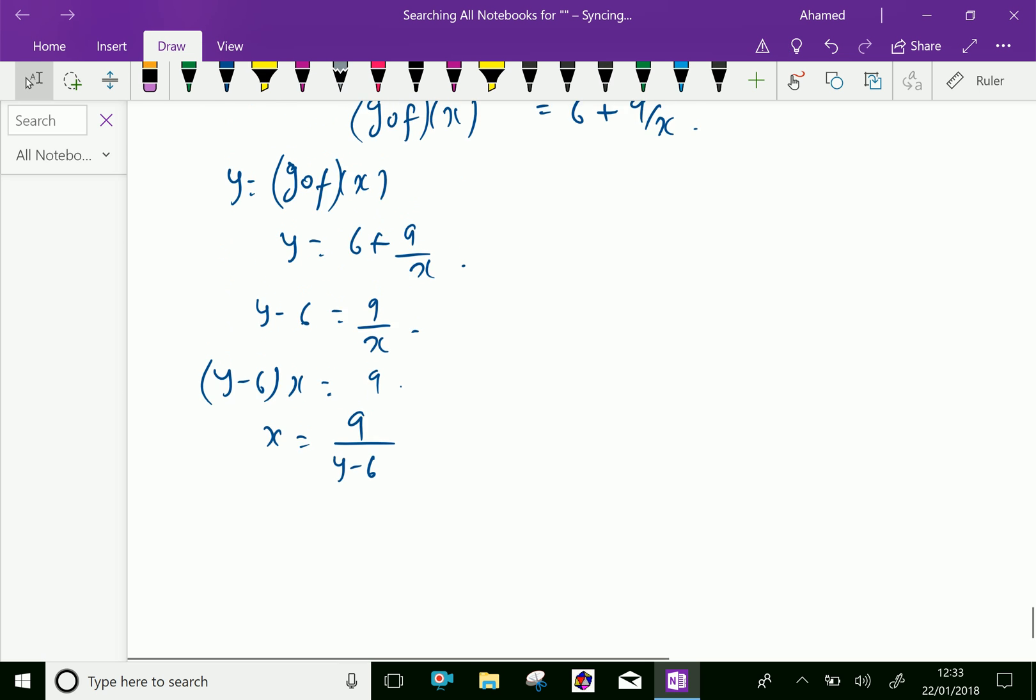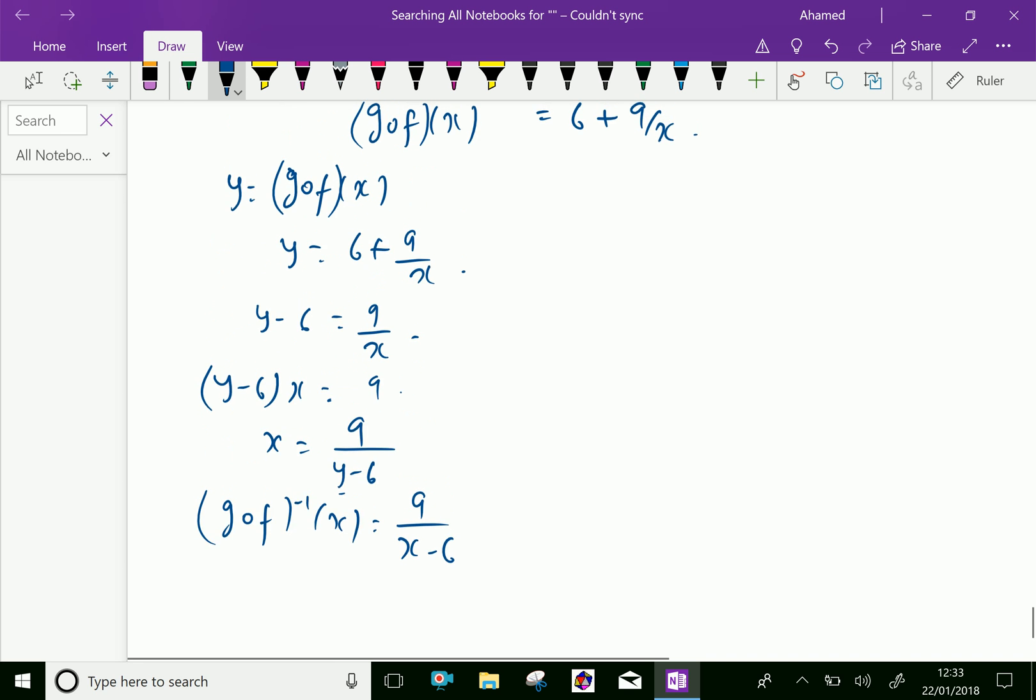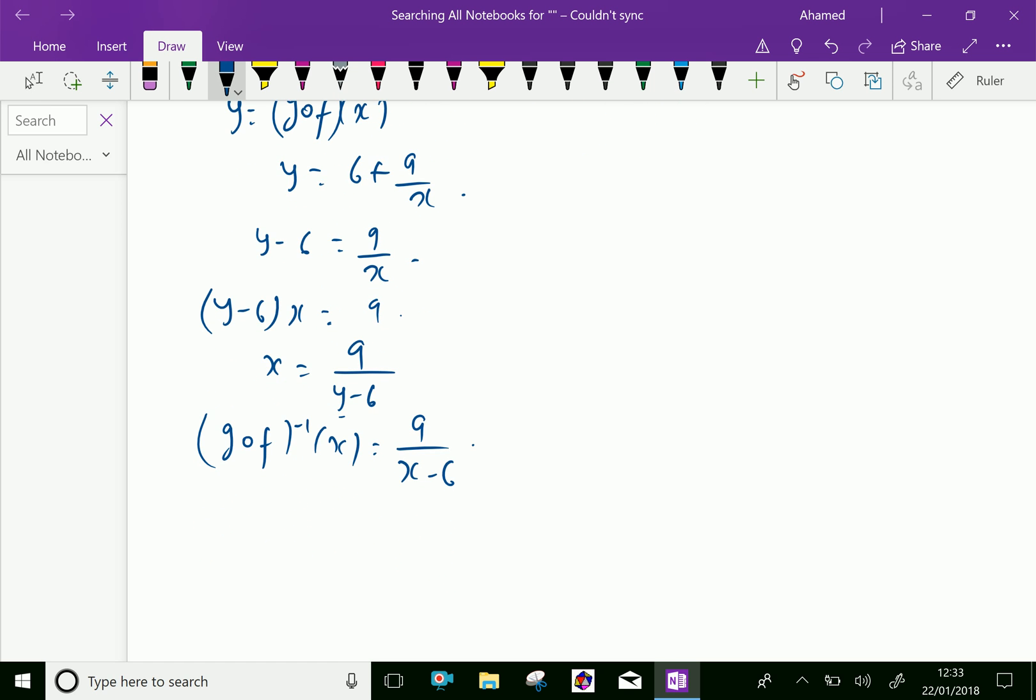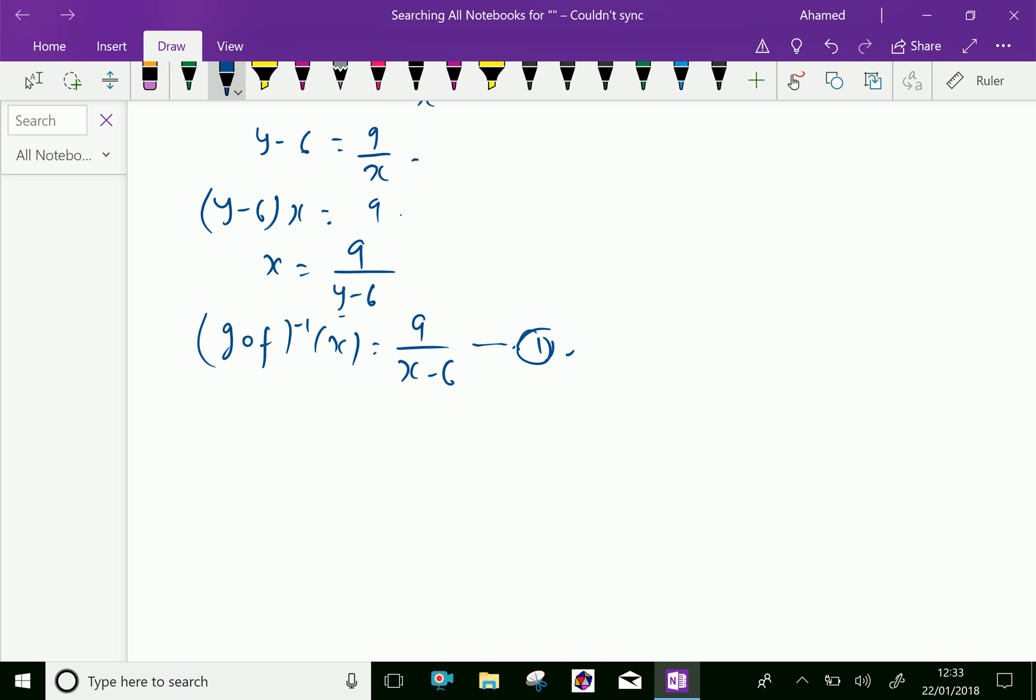And x equal 9 over y minus 6. Apply x as f inverse. That is g of f inverse x equal to 9. Change y as x, that is x minus 6, where x is not equal to 6. Give it here as 1.